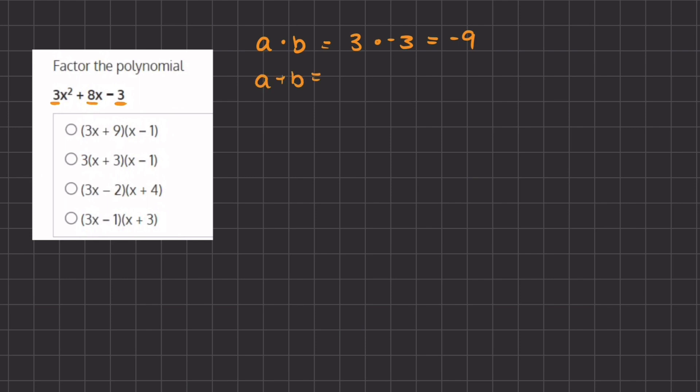So we need to find two numbers that multiply to negative 9 and add to positive 8. Let's start by looking at the multiples of 9. We have 3 and negative 3, and when we add them we get 0.